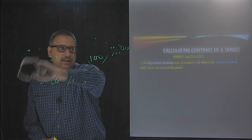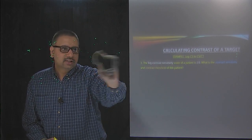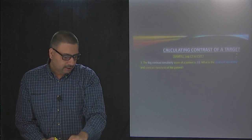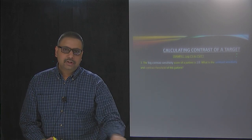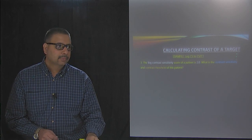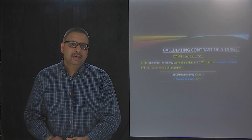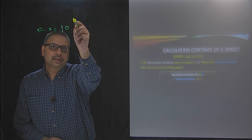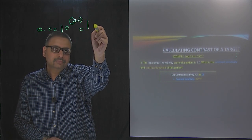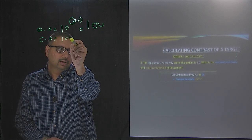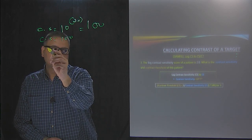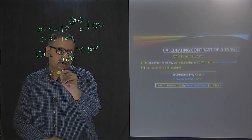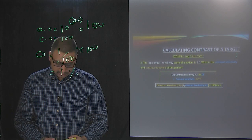The next problem provides a log contrast sensitivity of 2.0 and asks for both the contrast sensitivity and the contrast threshold. Contrast sensitivity is calculated as 10 to the power of log CS: 10 to the power of 2 equals 100. So the contrast sensitivity is 100. To find the contrast threshold: 1 divided by contrast sensitivity (100), multiplied by 100, equals 1 percent. So the contrast threshold for this patient is 1 percent.